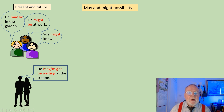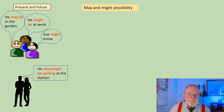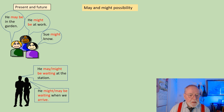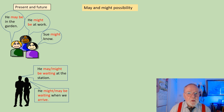We can also use may and might with the infinitive of the present continuous like this. The infinitive is 'to be waiting,' but because this is a modal verb, we do not use the 'to.' We can use it with a future idea: he might — or may, they're equal in this case — he might or may be waiting when we arrive.